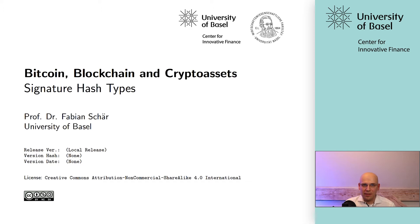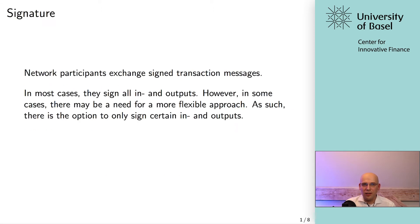When we talk about SIG hash types, you have to be aware that usually when people create transactions and pass them around, what they want to do is ensure that no one else can change any part of this transaction. The way this is done is essentially by signing the entire transaction — taking the entire transaction, computing a hash value from it, and then applying a cryptographic signature on top of this hash value. That's the basic step that you usually perform.